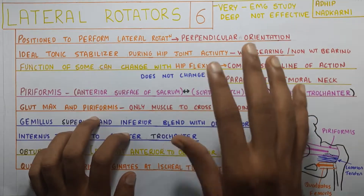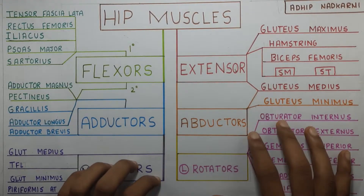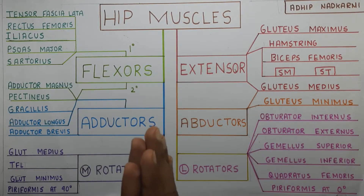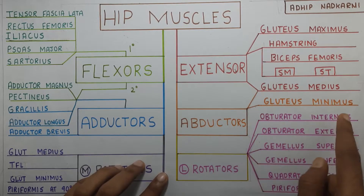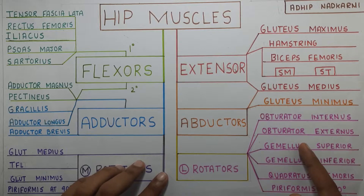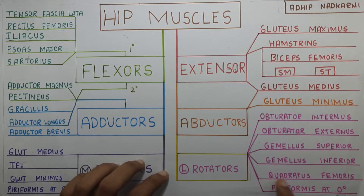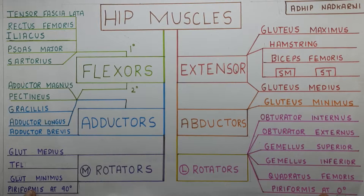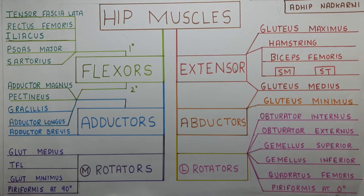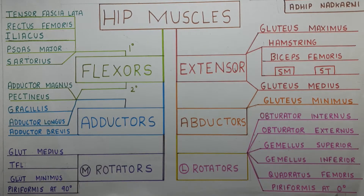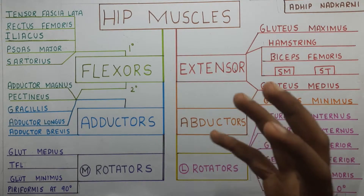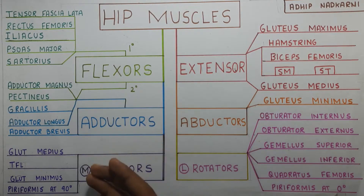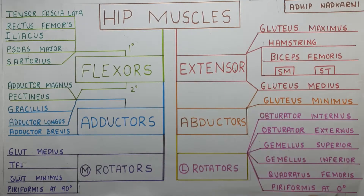Going back to our main page, the lateral rotators are: the obturator — internus and externus — the gemelli — superior and inferior — then there is the quadratus femoris, and then the piriformis, which is on both sides. Piriformis is a common medial as well as a lateral rotator depending on the position of the hip, which happens for other muscles too, which we will discuss soon.